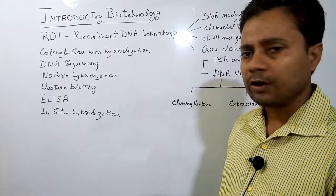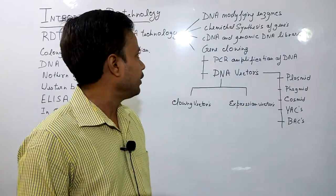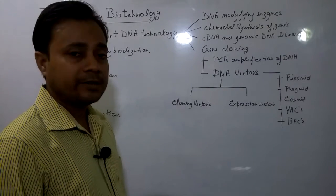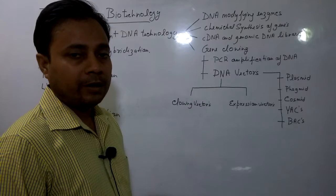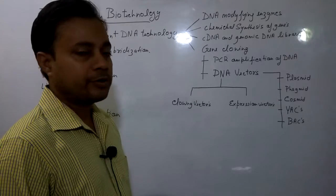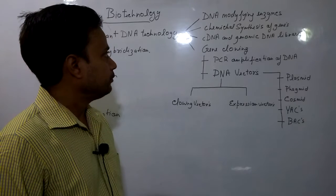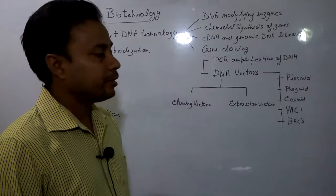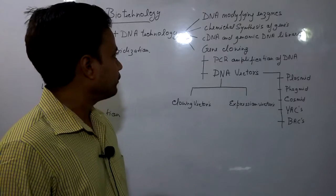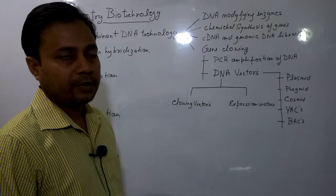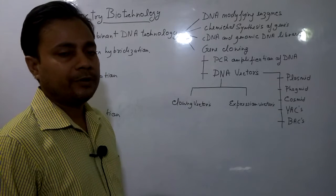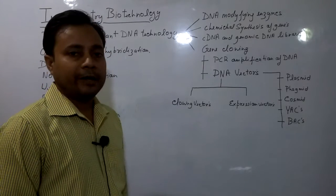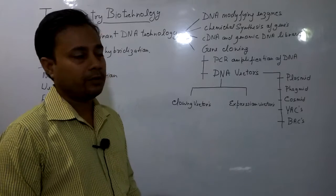Now we come to recombinant DNA technology, which principally includes DNA modifying enzymes — these are ligases, restriction endonucleases, polynucleotide kinases, and polymerases. The next is chemical synthesis of genes, for which there are two popular approaches that I will explain in the next classes. The next one is cDNA and genomic DNA library preparation, which is also an important branch from which questions are being asked.